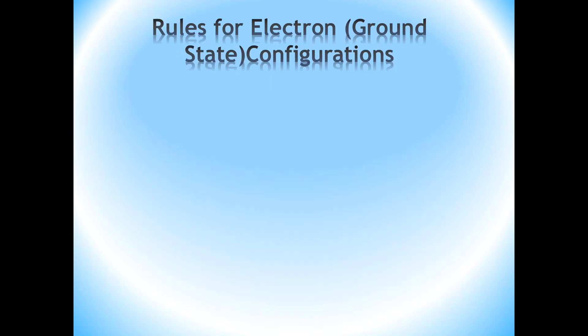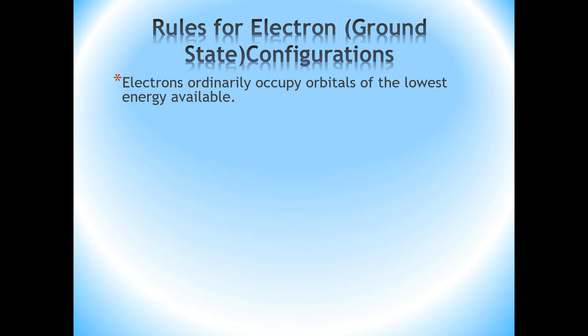Here are the rules for determining the electron configurations of atoms. These rules apply to ground state configurations and don't necessarily apply to excited state configurations. The first rule is that electrons ordinarily occupy orbitals of the lowest energy available. So in the ground state configuration, electrons will find themselves in the lowest possible energy orbitals available.